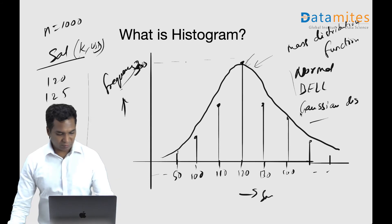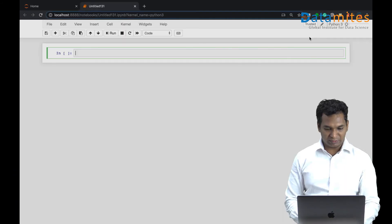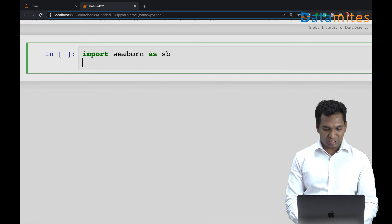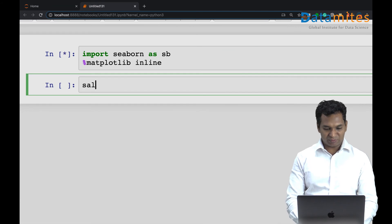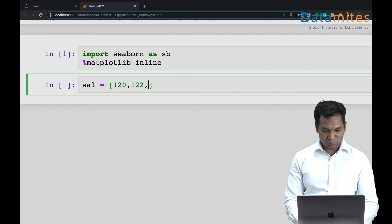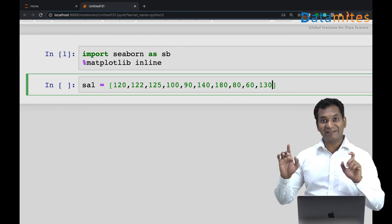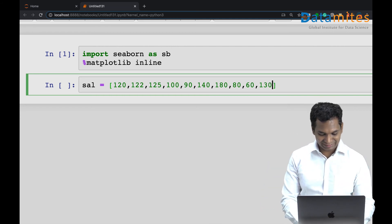So that's histogram. If you want to implement in Python, we can use, for example, Seaborn. Seaborn is a visualization package which works with Matplotlib. I'm going to say matplotlib inline to get the graph below. Then I'm going to define some salaries: 120, 122, 125, 100, 90k, 140k, 180k, 80k. You do have people working with 50k, 60k, although data scientists are supposed to be getting a lot more money in the market. So we have a bunch of numbers here.